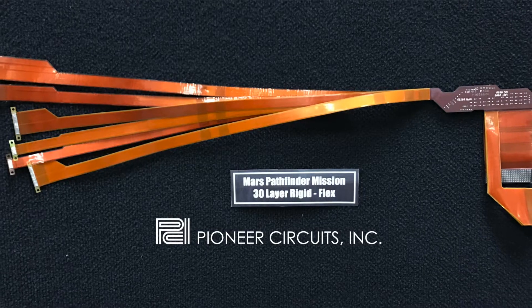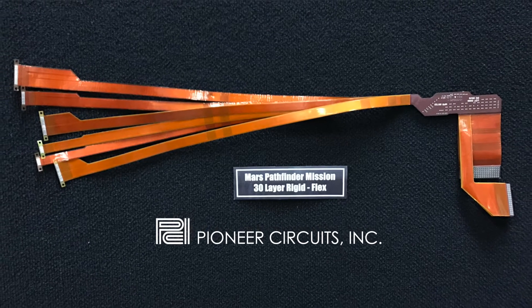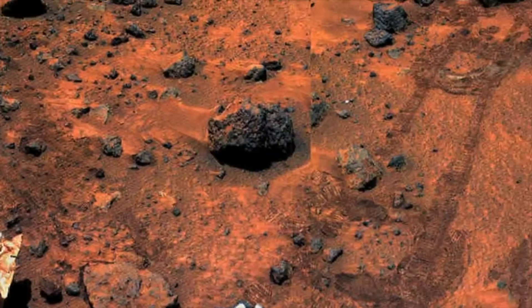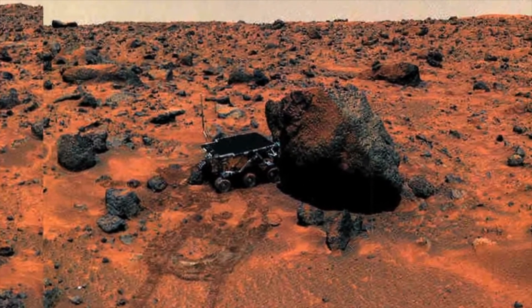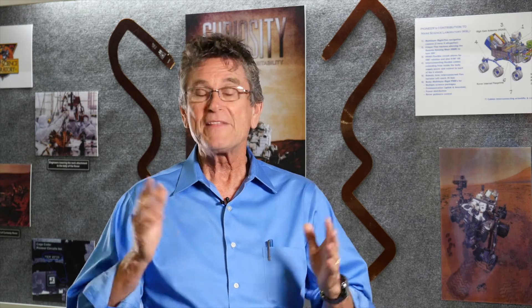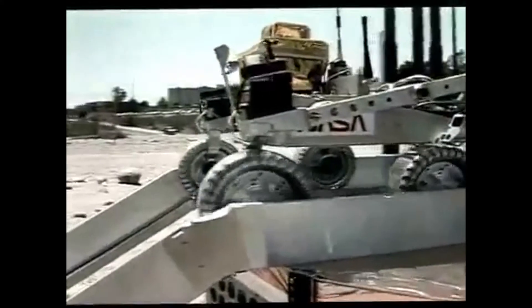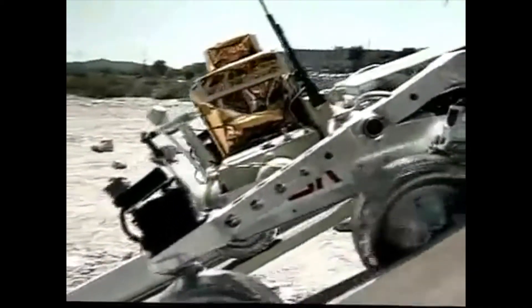The number one success was for a 30-layer rigid flex that had never been built before, especially for a space mission. NASA's JPL Mars Pathfinder was the first mission to Mars for a rover. No one across the United States even bid on the program to make that 30-layer rigid flex. Yet, it was made and produced a fantastic avenue for JPL and NASA to go down with a robotics program.